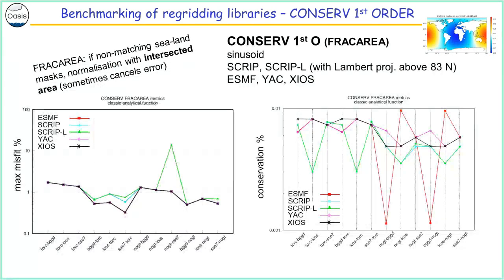That's why sometimes the fracarea gives good results for wrong reasons. Looking at the results — the maximum error across different pairs of grids — you see right away that something is happening for the SCRIP library, while the other libraries give exactly the same result.